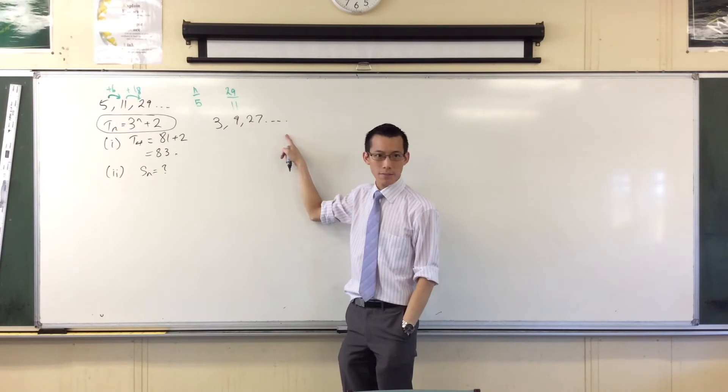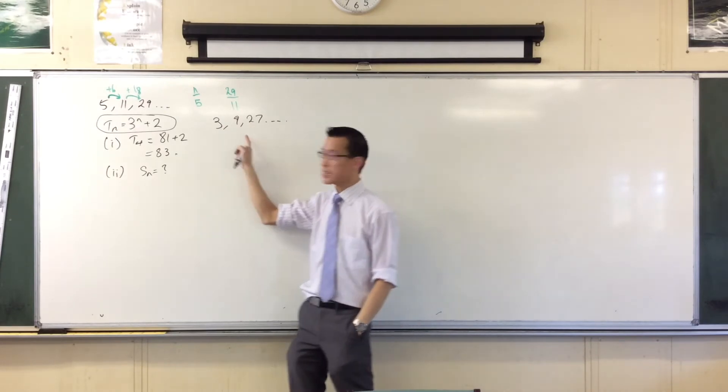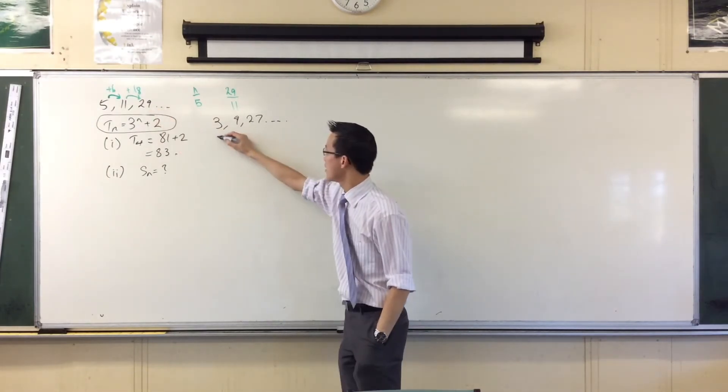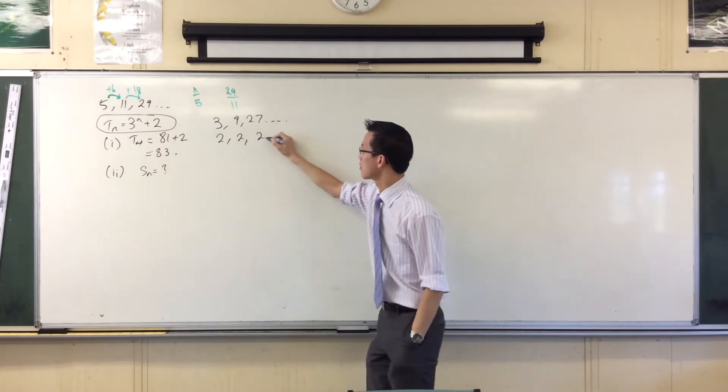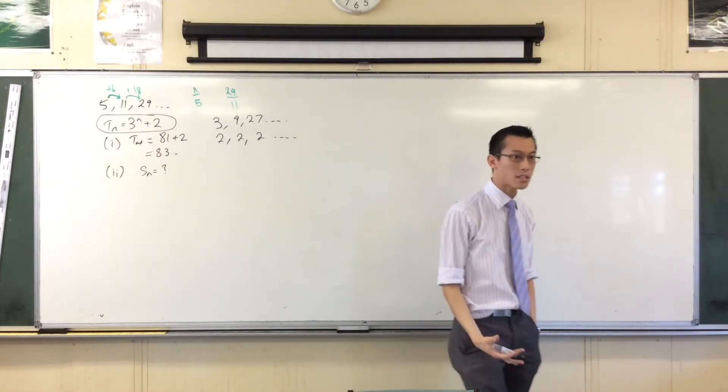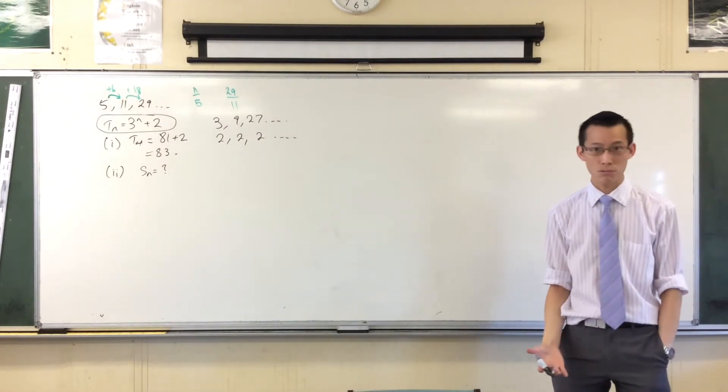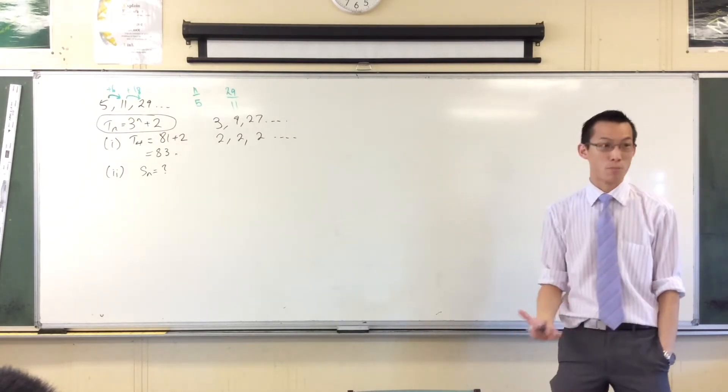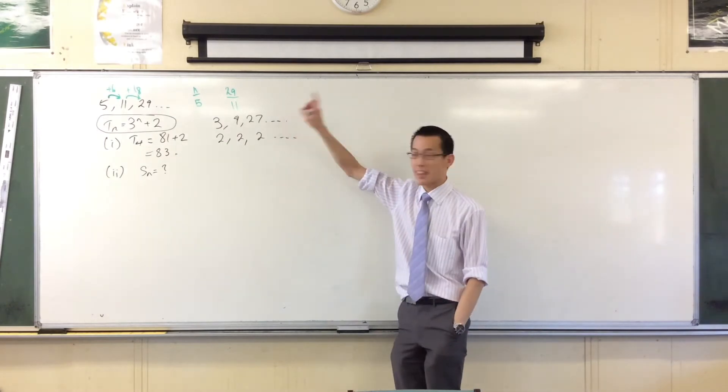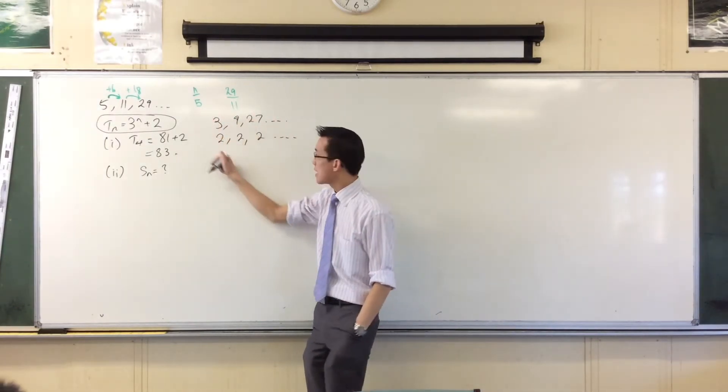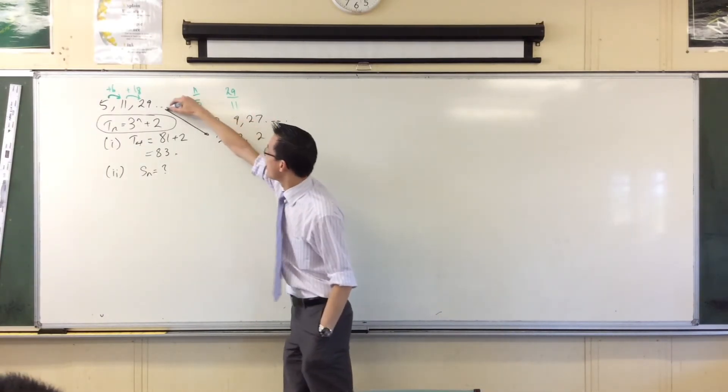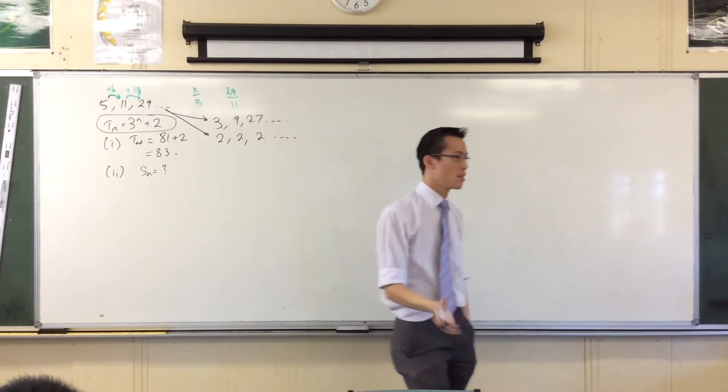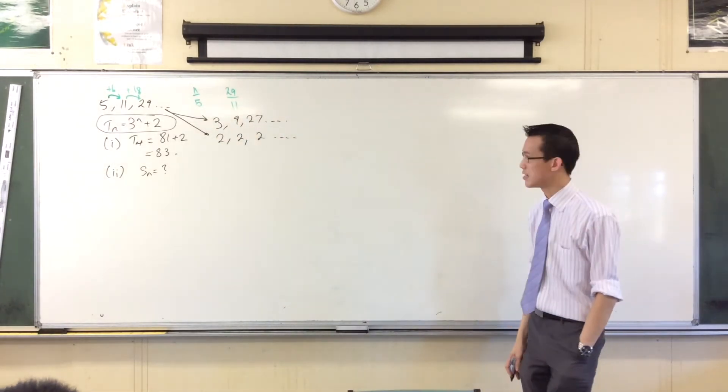So here's a GP. And the difference between this and this is another GP. That's a GP, isn't it? 2, 2, 2 - also happens to be an AP. They're both pretty boring anyway, but that doesn't matter. Now that I know that that series is made up of these series, it's pretty easy from there, isn't it?